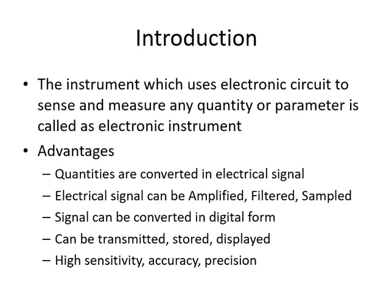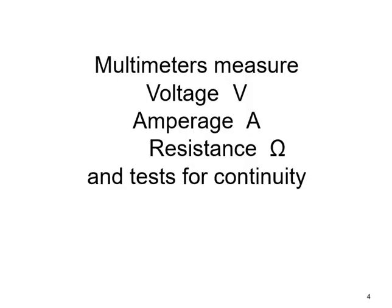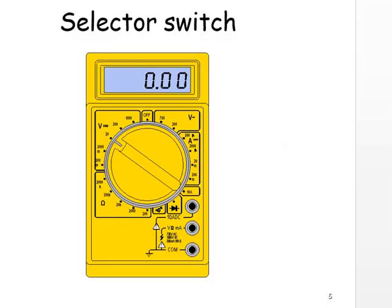In this unit we start with the digital multimeter. The digital multimeter is used to measure voltage, current, resistance, and test for continuity. The digital multimeter as shown in the PPTs shows the selector switch. This type of digital multimeter we have already implemented in our practicals, performing various practicals of basic electronics engineering by using the digital multimeter and interfacing it with other equipment.